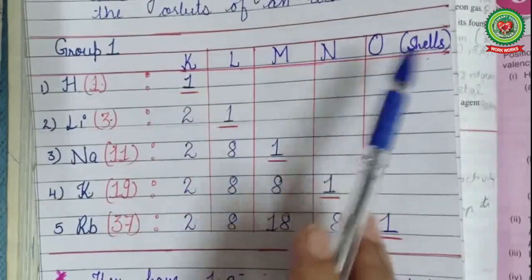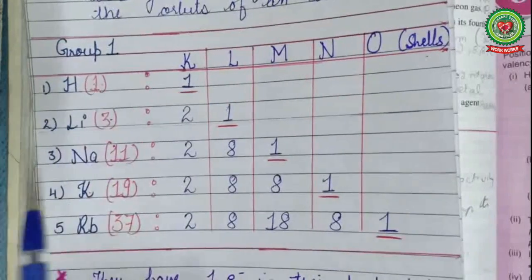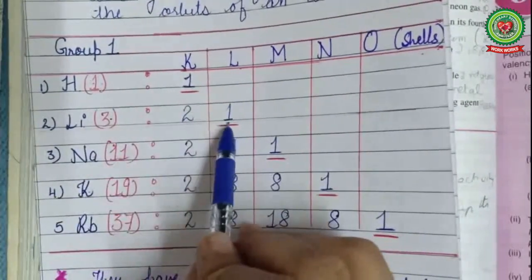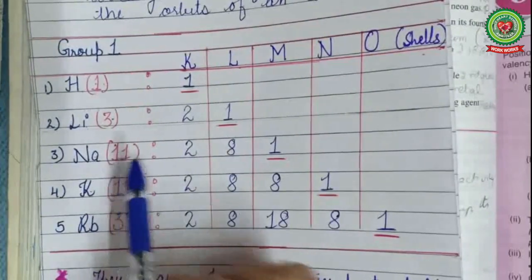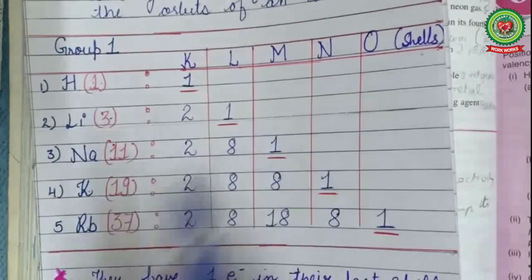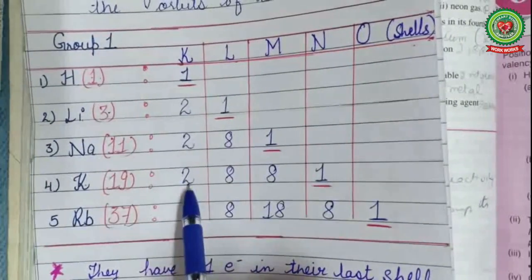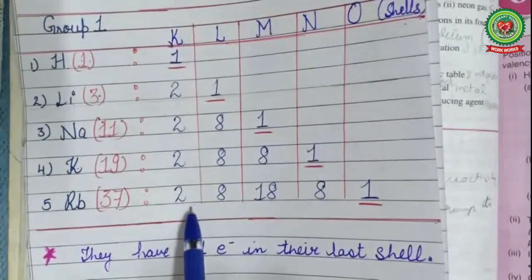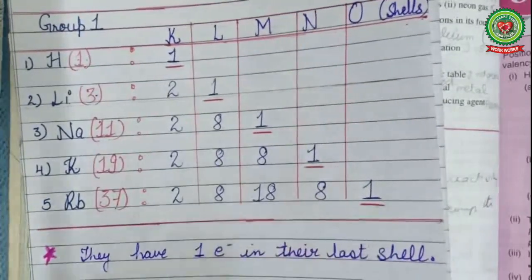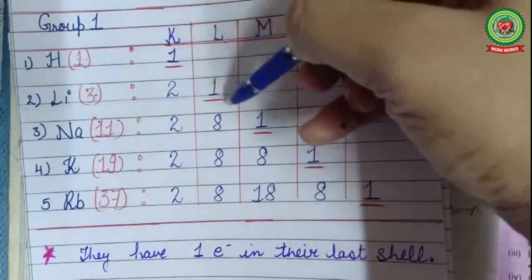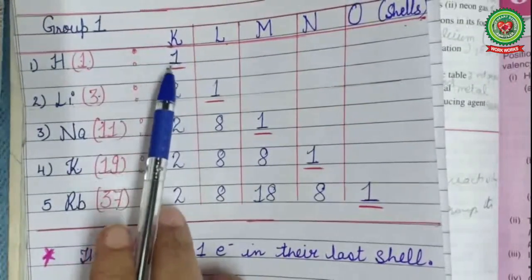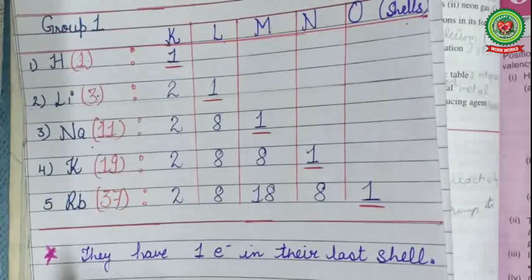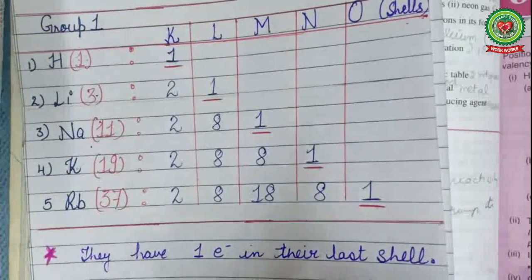Arranging electrons in their shells: hydrogen (atomic number 1) has electronic configuration 1; lithium is 2,1; sodium (atomic number 11) is 2,8,1; potassium (atomic number 19) is 2,8,8,1; rubidium (atomic number 37) is 2,8,18,8,1. You can see a similar trend — each element has only one electron in its last shell. Therefore, the electronic configuration of alkali metals and hydrogen is similar, as both have one electron in their last shell.